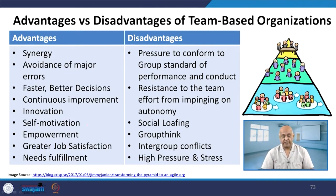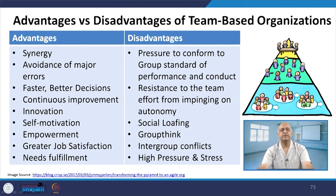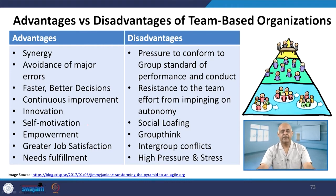Team-based organizations have certain advantages: synergy, cohesiveness, and cohesion among members. Avoidance of major errors occurs because collective decisions are made and collective wisdom is used — if one person misses a point, another will notice. This leads to faster and better decisions, continuous improvement, innovation through new ideas, stakeholders involved in decision making, self-motivated and empowered team members, greater job satisfaction, and fulfillment of physiological, safety, social, esteem, and self-actualization needs.